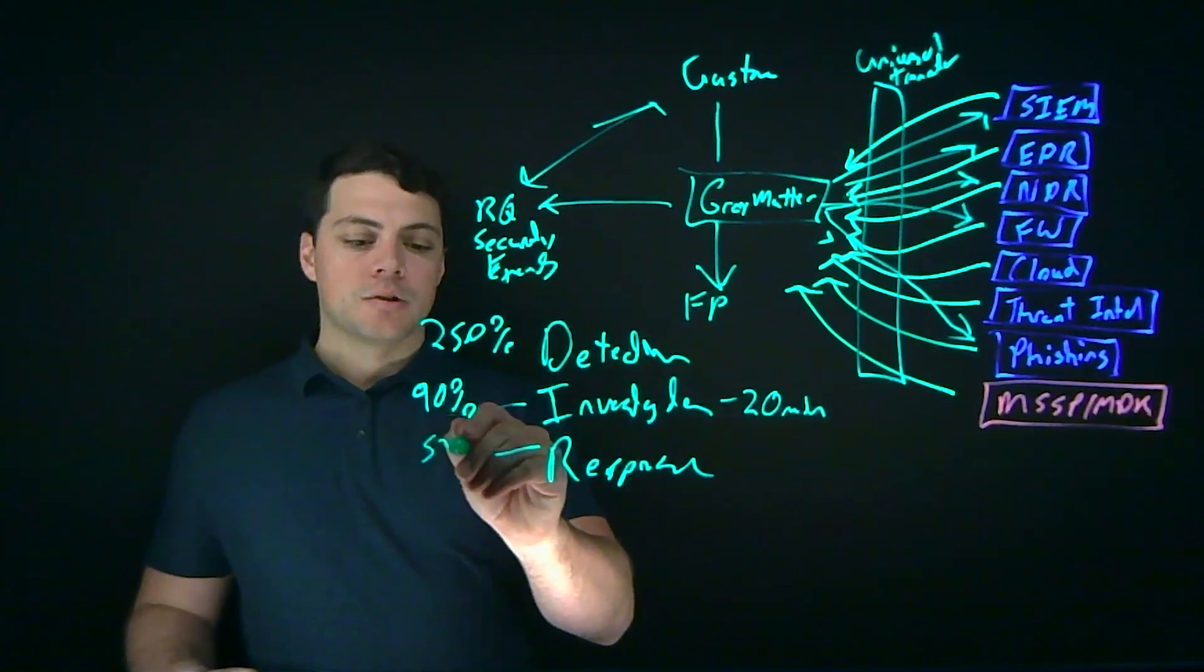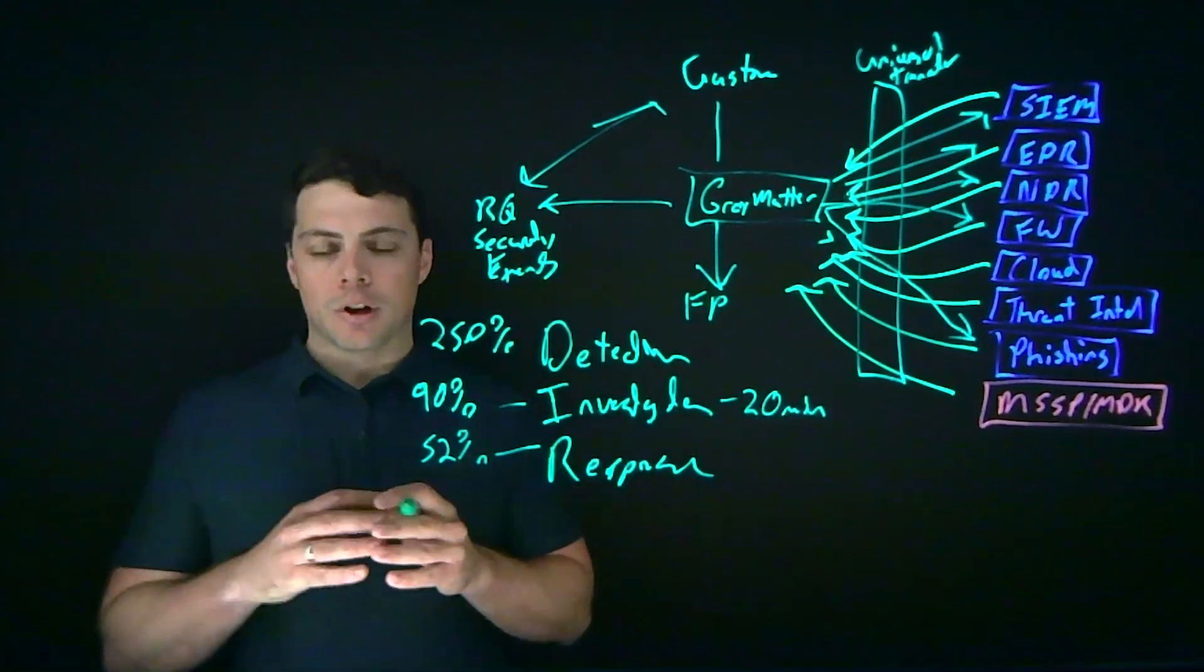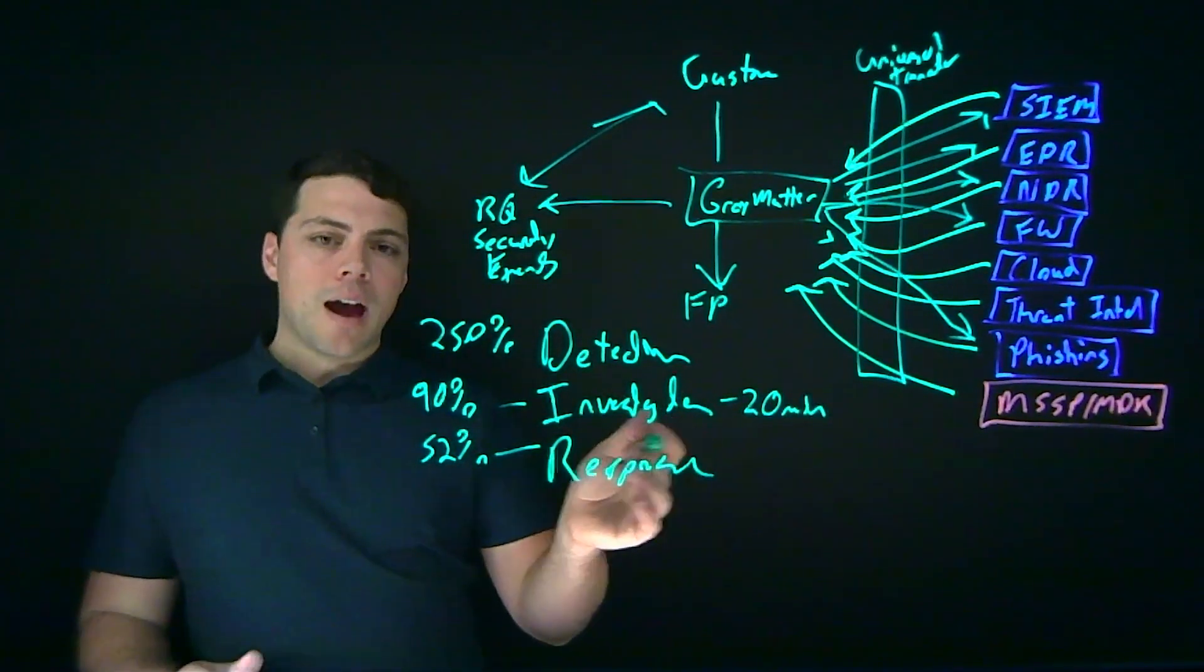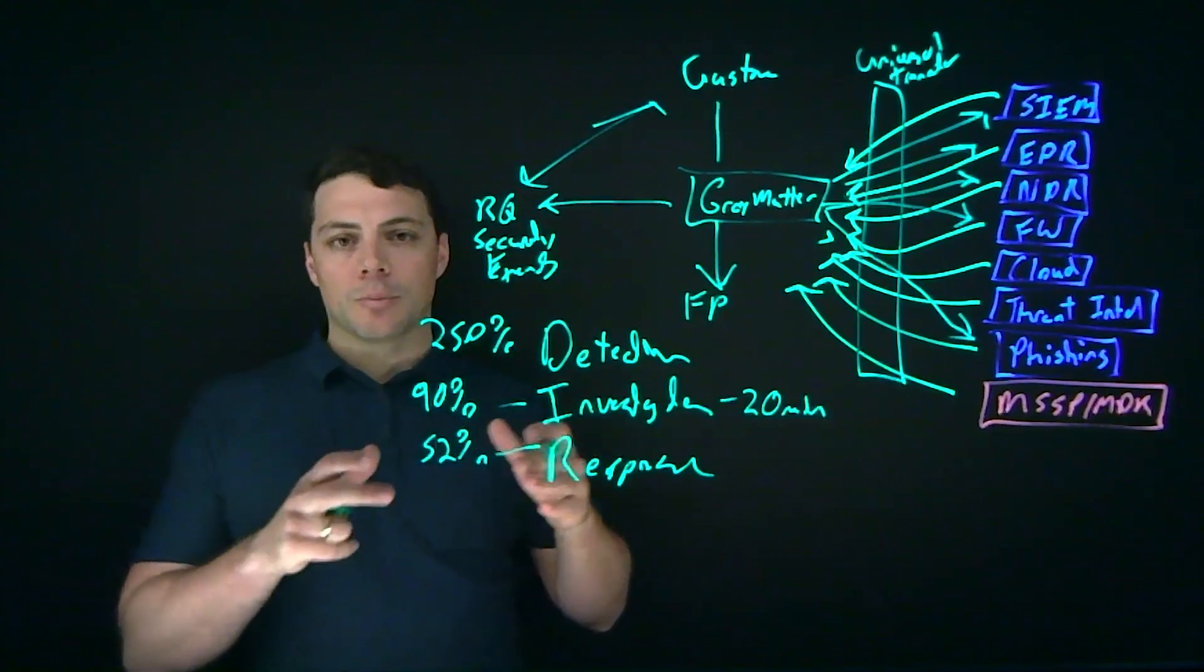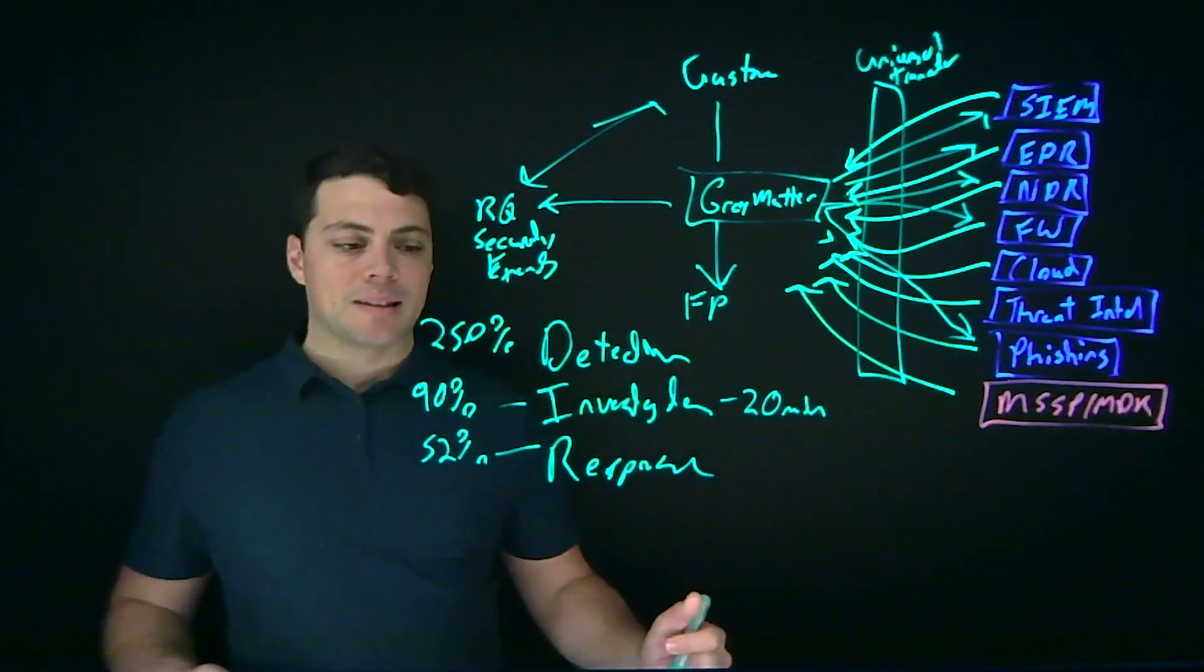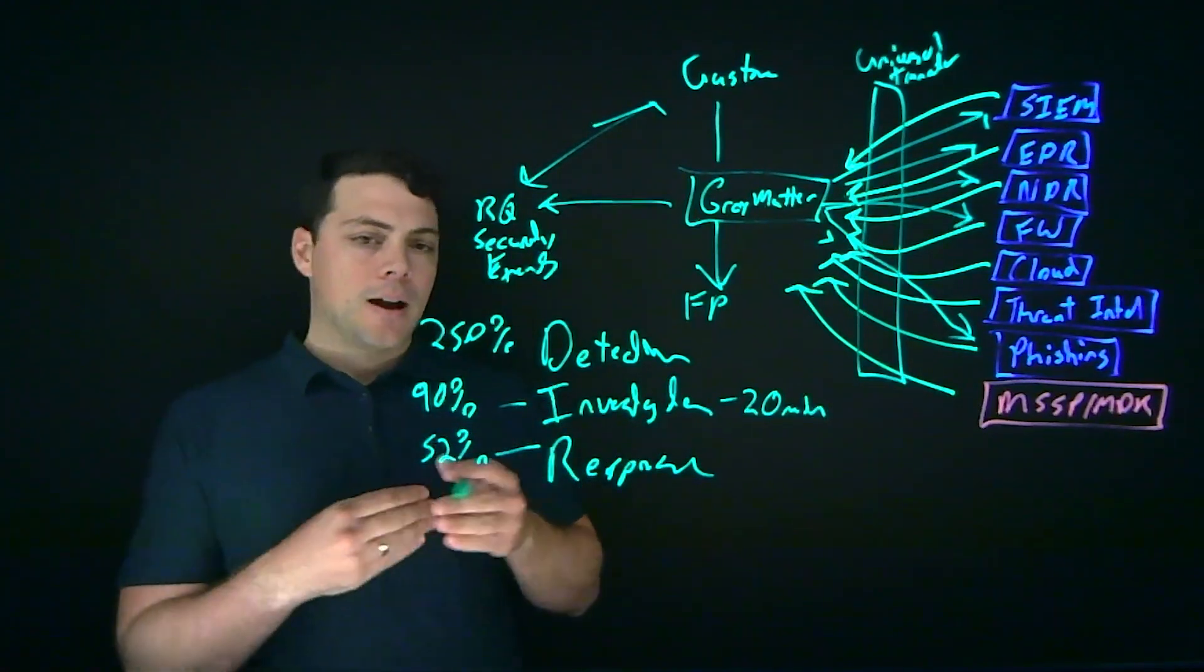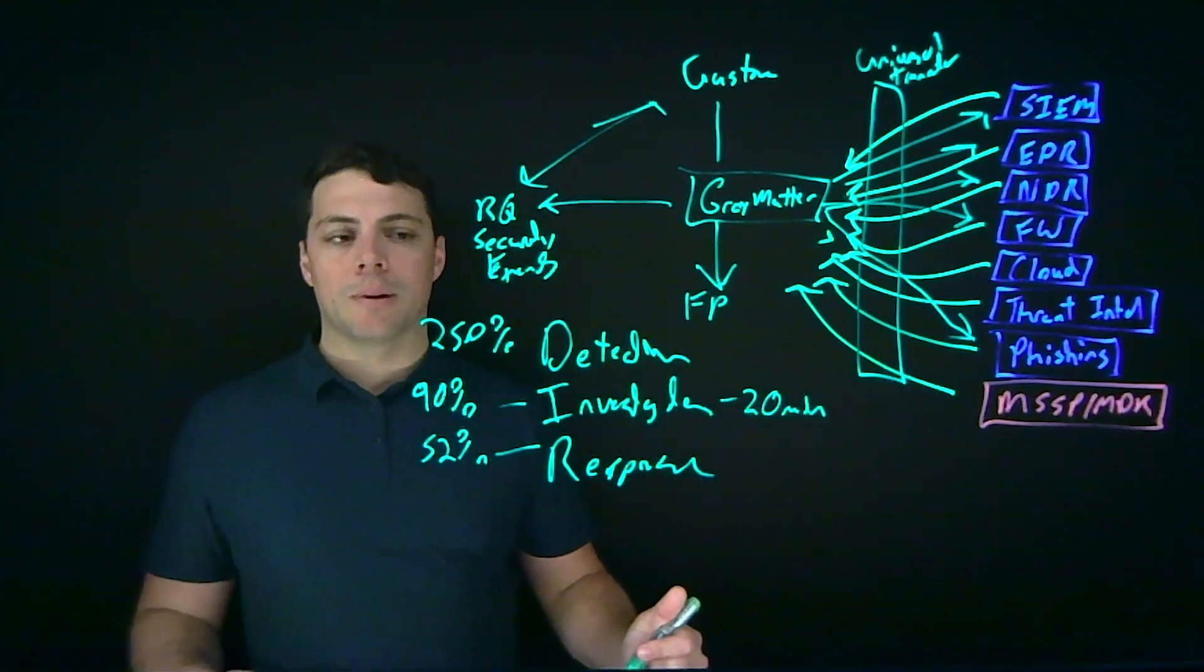This is going to reduce noise by 90%. And it's going to speed up response by an average at least 52%. When we talk response, we're talking about not just detection, we're talking all the way through the ability to remediate. But on average, we're seeing a 52% reduction in the amount of time it takes, because we're cutting so much out of that beginning process. And your team is spending more time working within the business to go remediate.